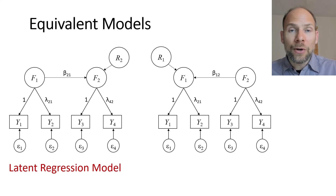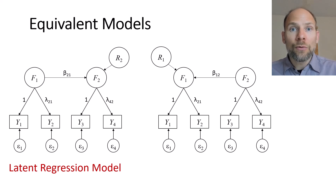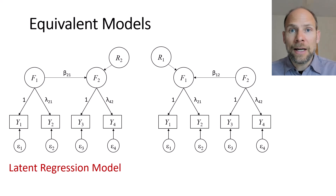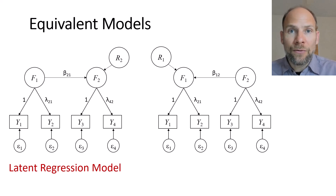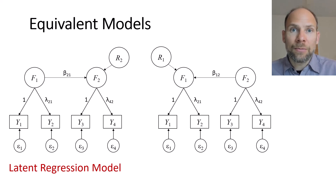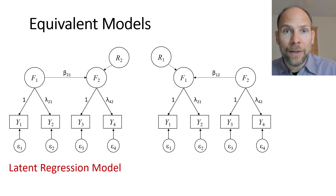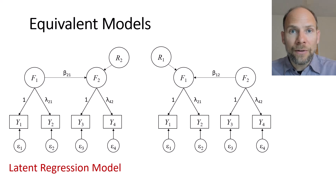This shows us that model fit alone does not allow us to prove causality. Model fit is only useful to rule out incorrect models. When a model doesn't fit, we know something is wrong. But when a model fits the data, that does not prove at all that the causal assumptions are correct — as easily shown by this issue of equivalent models. For any model you fit, you will find other equivalent models that make different causal assumptions and yet fit equally well. Model fit is not helpful to prove causality.